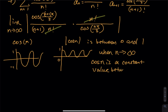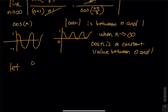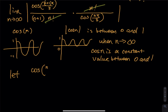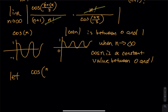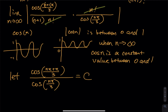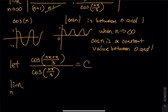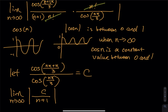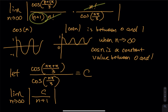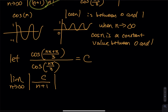As n approaches infinity, the absolute value of cosine(n*pi/3) is a constant between 0 and 1 — call it c. So cosine((n+1)*pi/3) in the numerator equals cosine(n*pi/3 + pi/3), and cosine(n*pi/3) in the denominator we let equal c, just a constant. Overall, the limit as n approaches infinity is just a constant c divided by n+1 — the n+1 comes from the factorial cancellation piece.